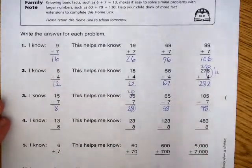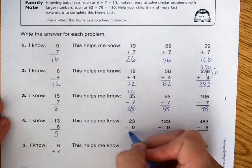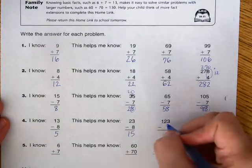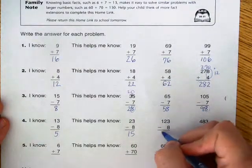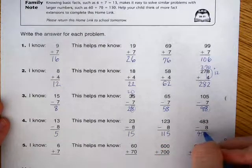Number 4, 13 minus 8 equals 5. This helps me know that 23 minus 8 equals 15, 123 minus 8 equals 115, 483 minus 8 equals 475.